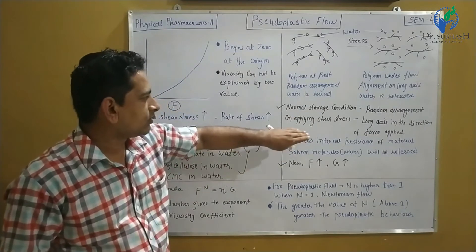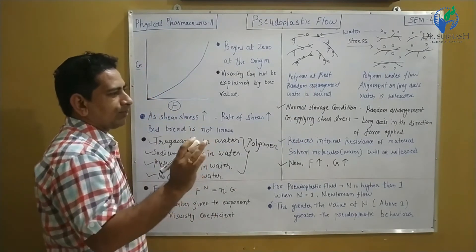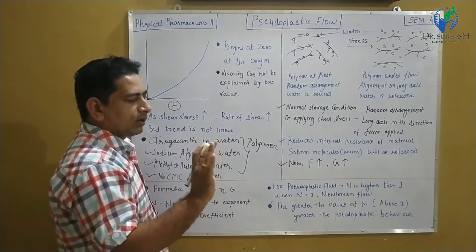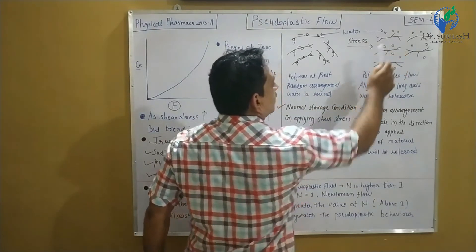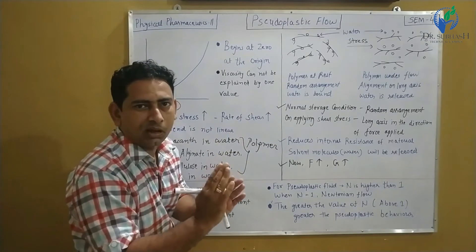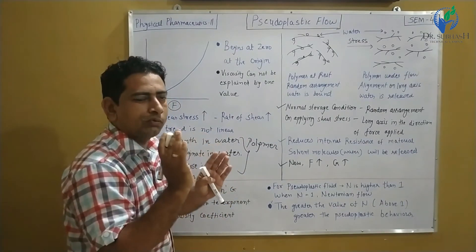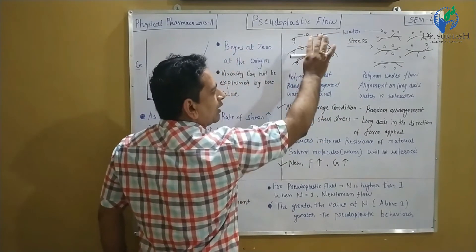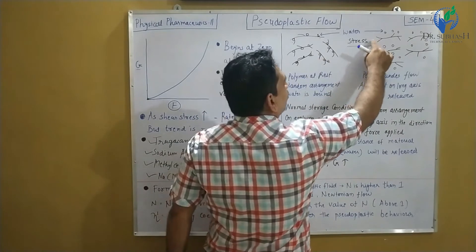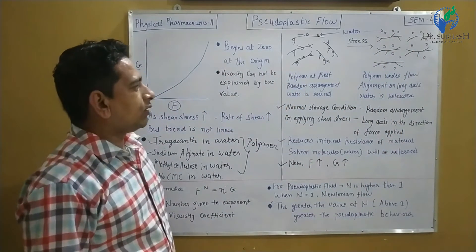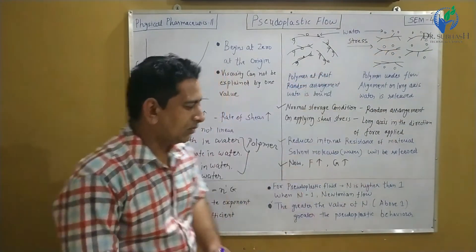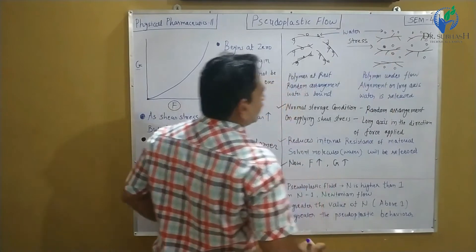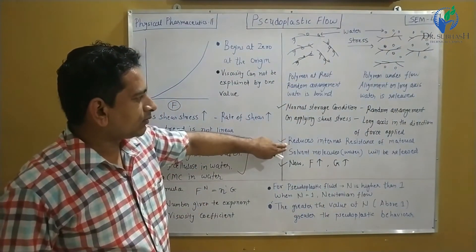Now if we are applying stress to this polymer, then all the molecules will be arranged with their long axis in the direction of the force applied. That means the longer part of the polymer will be arranged in the direction of the force applied — for example, from left to right. Additionally, the water molecules that were bound to the polymer will be released, and this reduces the internal resistance of the material.